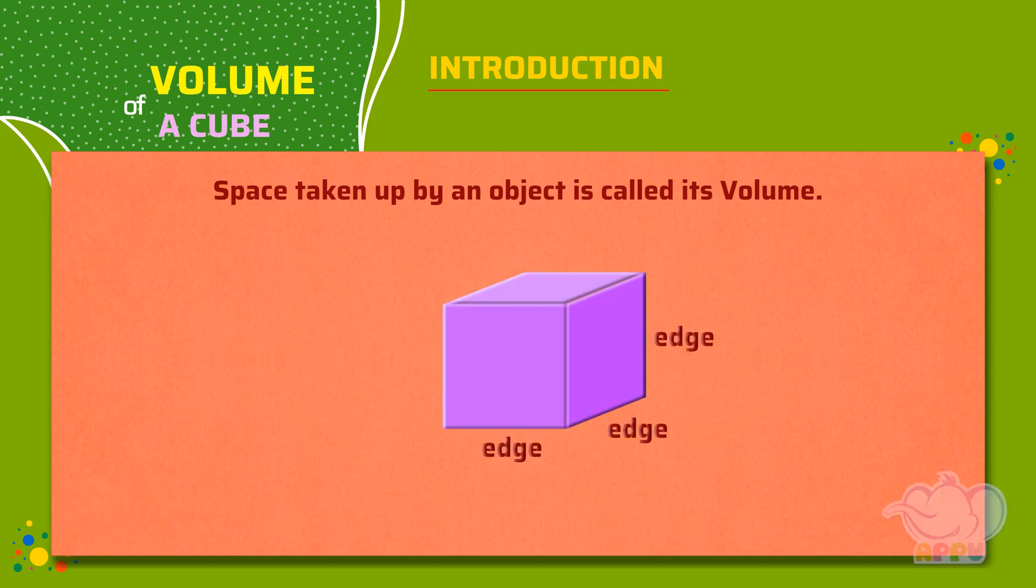It is easy to find the volume of a cube using a formula. We first find the length of one edge. Since all edges of a cube are equal, volume of a cube equals edge times edge times edge.